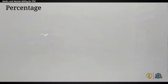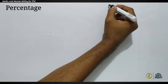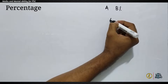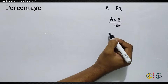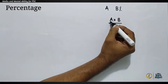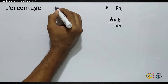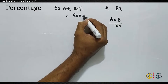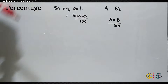I already said that this is a basic topic. We have to discuss the topic of calculation. Now, we have to discuss the numbers A and B. What do we do? A into B divided by 100. So we have to discuss A into B divided by 100.